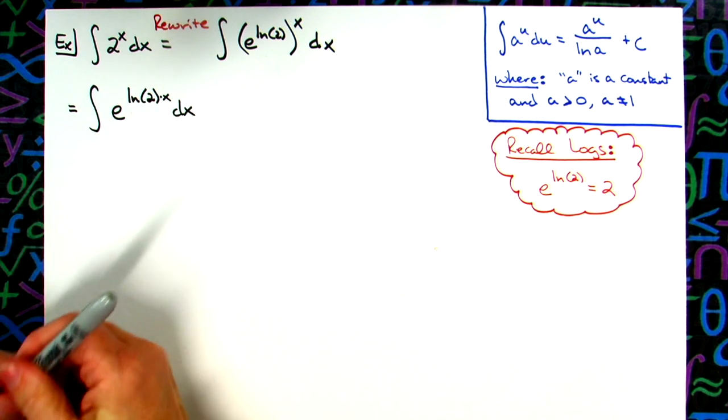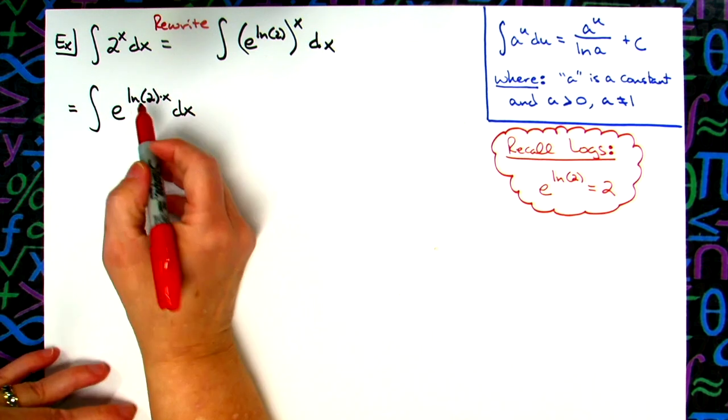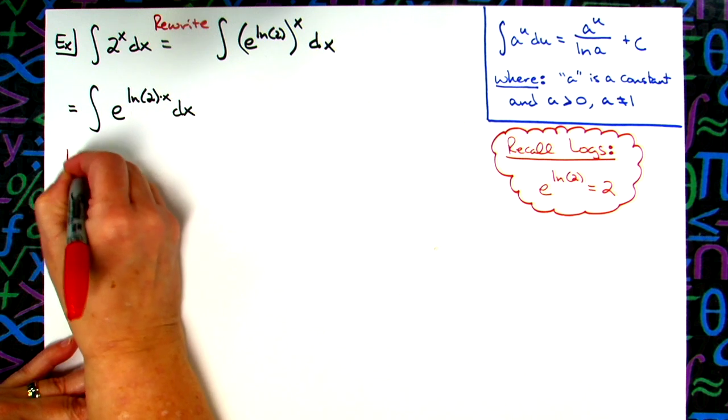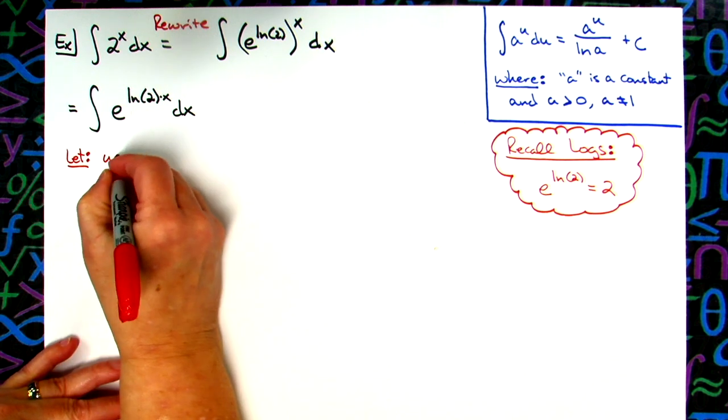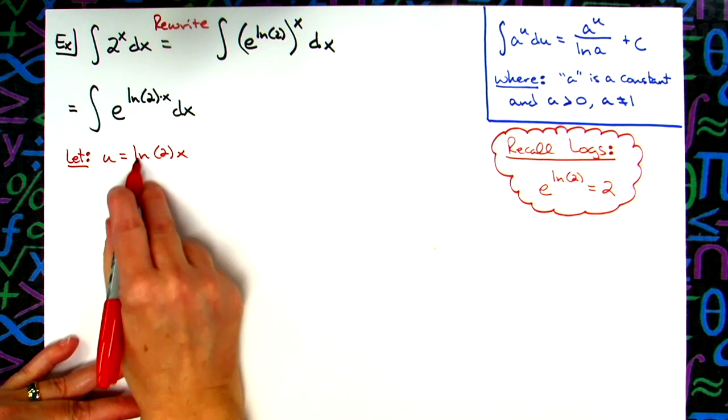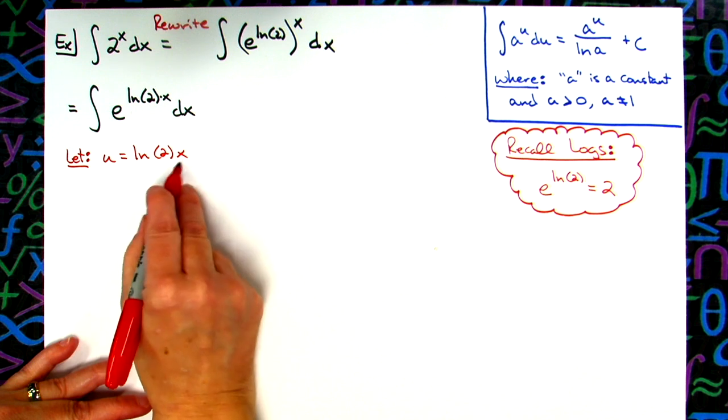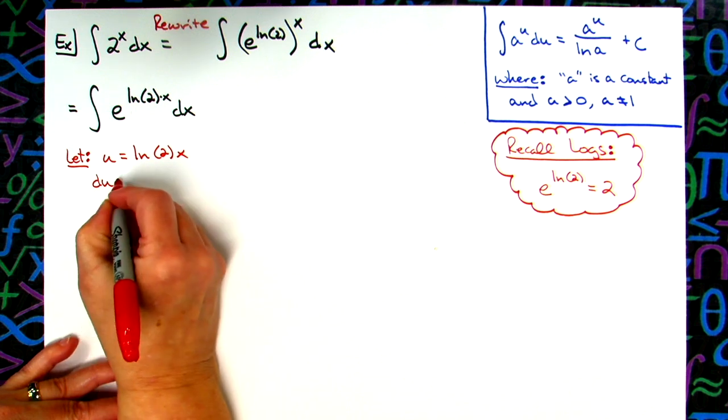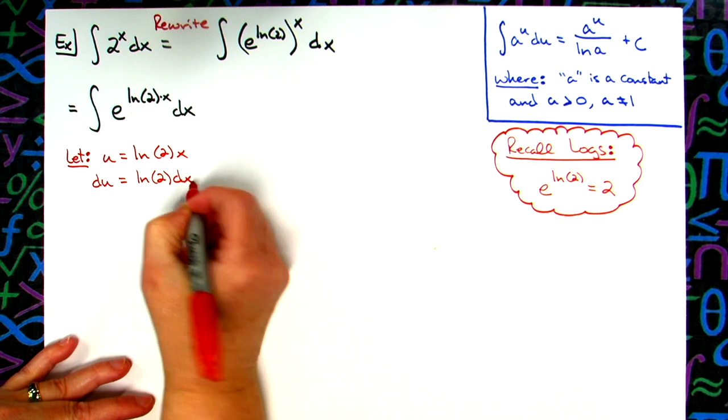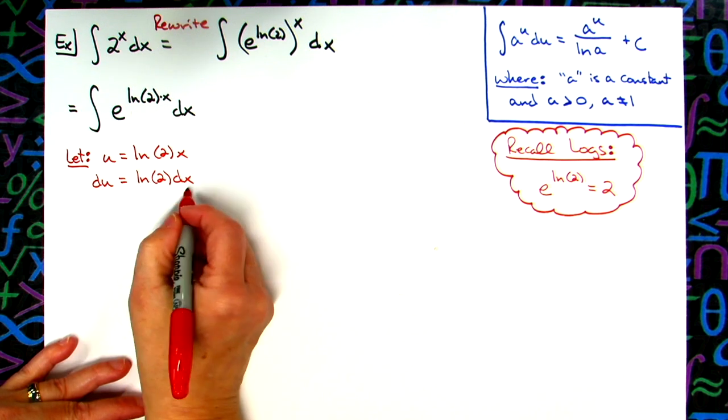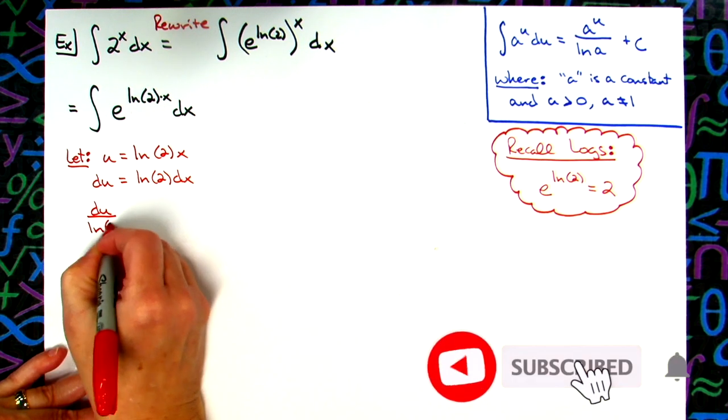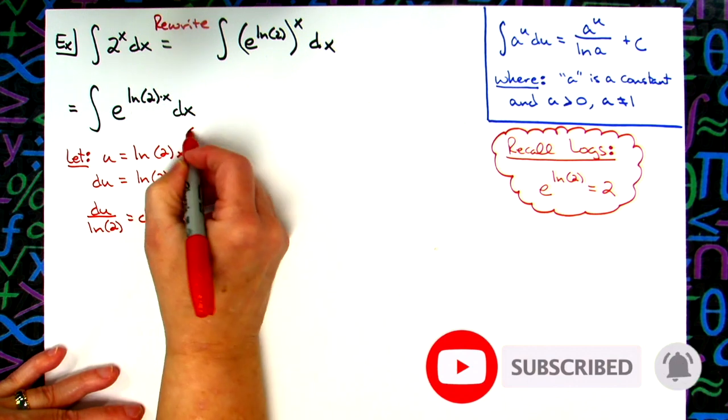Generally at this point we can use a u substitution, and let our u be whatever is raised to the exponent there. So I'm going to let my u be the natural log of 2 times x. Natural log of 2 is just a constant, so I have a constant in front of an x, so this is going to be really easy to take the derivative of. Du is just going to be the natural log of 2, and then dx. Going ahead and solving all the way down for that dx, we'll have a du over natural log of 2 is equal to dx.